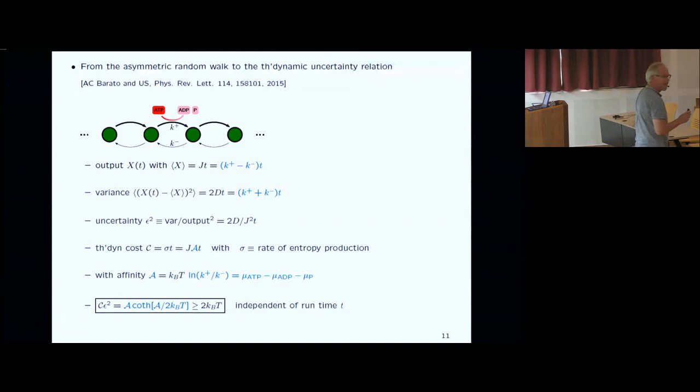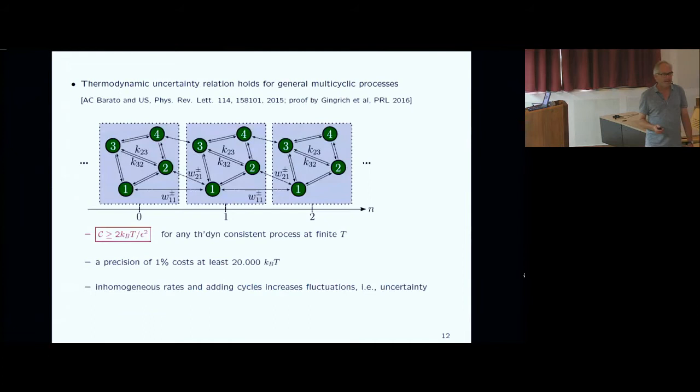However, if you want this process to run preferentially to the right, you have to provide energy — you have to be out of equilibrium. The thermodynamic cost is the entropy production times time, or the current times the affinity times time. The affinity is just the log ratio of forward and backward rates — which, if driven by a chemical reaction, is just the delta mu of the reaction. The cute result is that cost times uncertainty squared is bounded by 2 kBT. If you want a very precise process, you have to pay a lot: precision doesn't come for free.